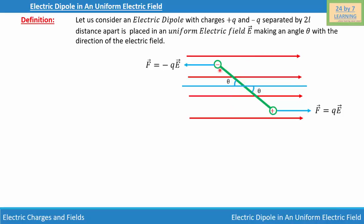The electric dipole has charges -q and +q with length 2l, placed in the uniform electric field. The dipole is making an angle of theta degrees with the direction of the electric field.